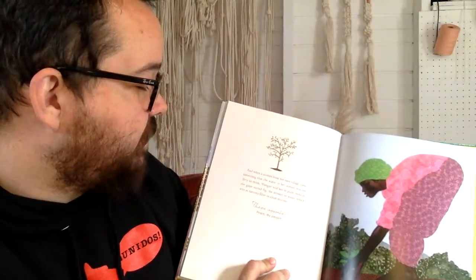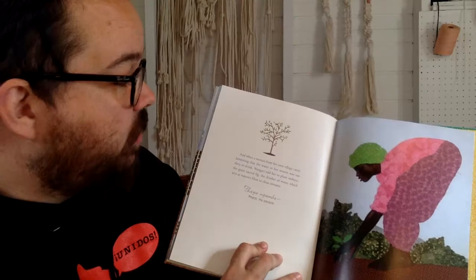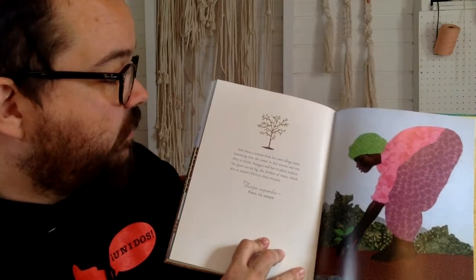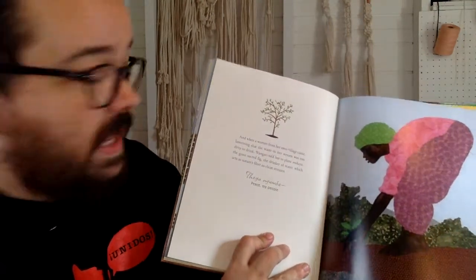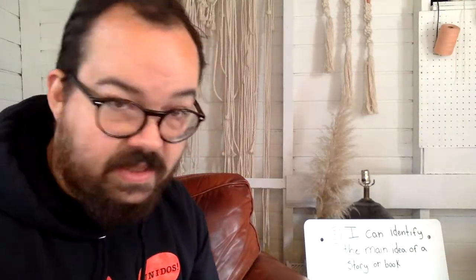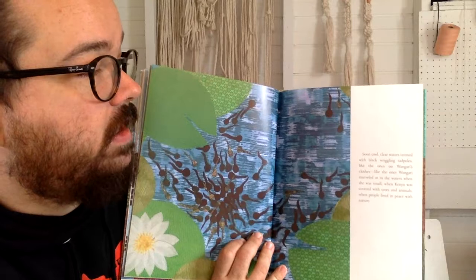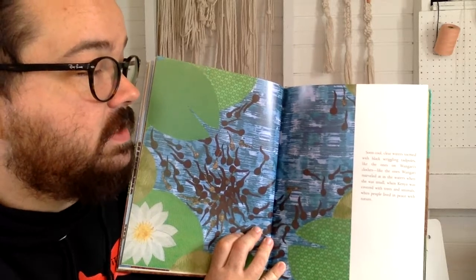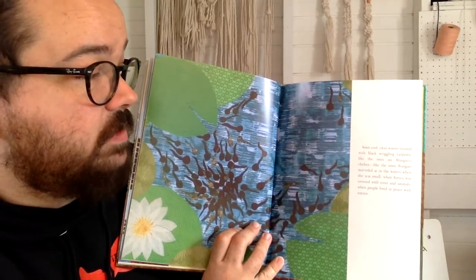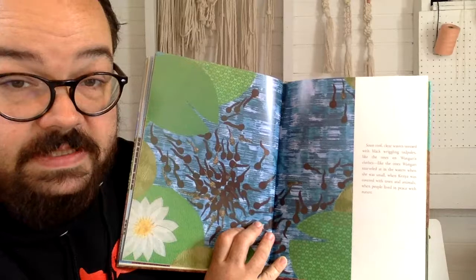And when a woman came from her own village, lamenting that the water in her stream was too dirty to drink, Wangari told her to plant Mugoya, the giant sacred fig, the drinker of water, which acts as nature's filter to clean streams. Thea Numbaya — peace, my people. All of these plants are native to Kenya and Africa. Soon, cool, clear waters teemed with black, wriggling tadpoles like the ones on Wangari's clothes — like the ones Wangari marveled at in the waters when she was small. When Kenya was covered with trees and animals, when people lived in peace with nature.